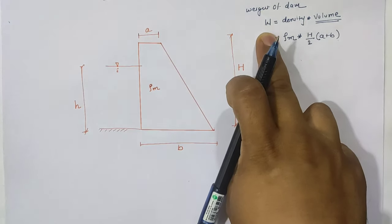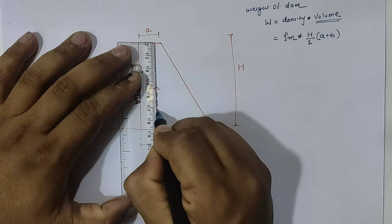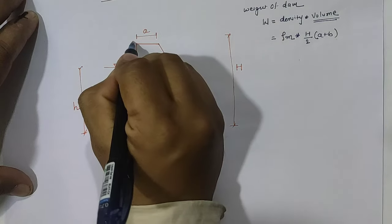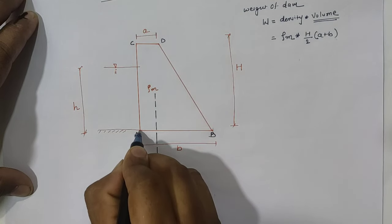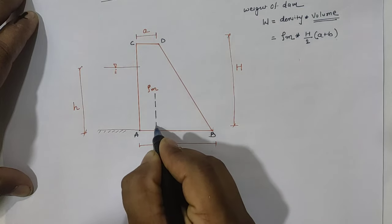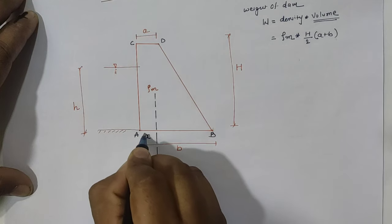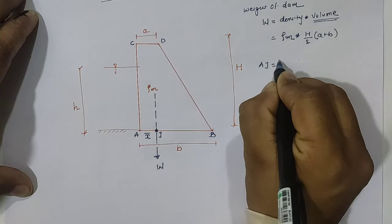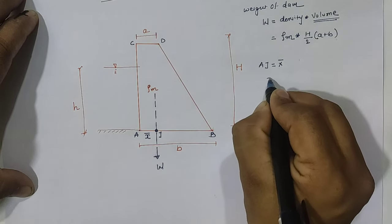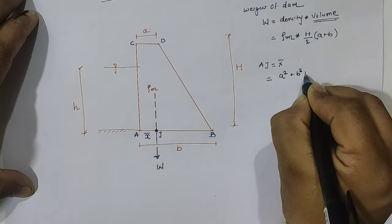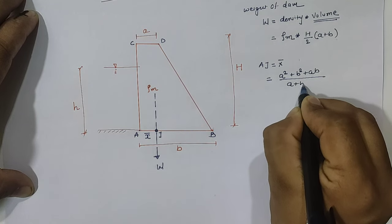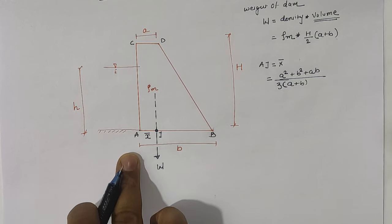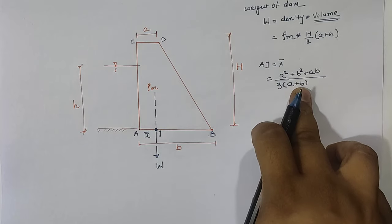The weight of the dam passes through the CG of the section. If AB is the base and CD is the top width, the distance from A cut by W is denoted as x-bar, called AJ. AJ can be calculated by the formula: AJ = (a² + b² + ab) / (3(a + b)), which gives the CG distance for the trapezoidal section.